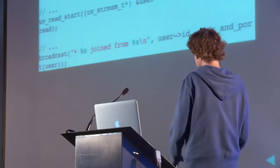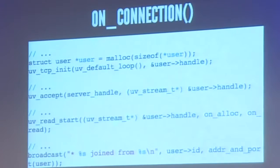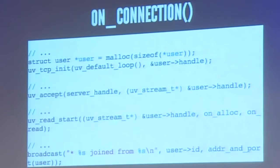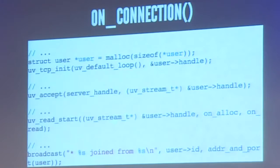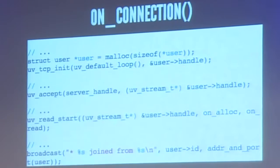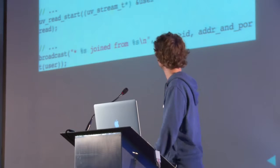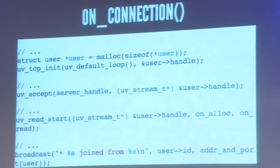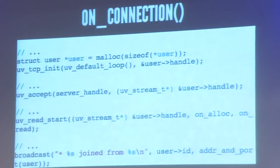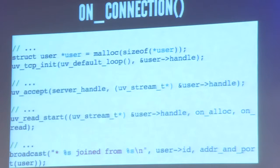The onConnection callback: when it gets called, it means there is a new connection pending from a user. We allocate a little bit of memory to maintain state, create a handle for the client, accept the new connection, then tell LibUV to start listening for incoming data. And finally, we broadcast to all users that there's a new user.